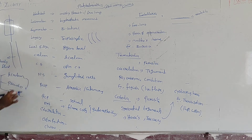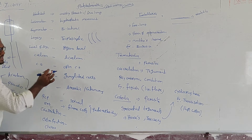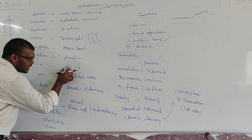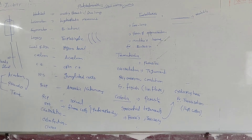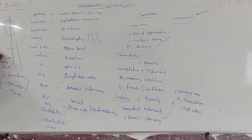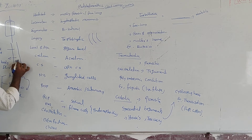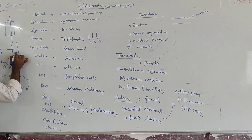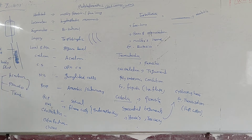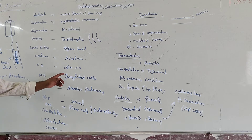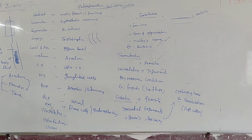Now if we go for the circulatory system, the circulatory system here is an open circulatory system. Open circulatory system means there are no blood vessels. The blood is scattered in the body cavity. That type of circulatory system is called an open circulatory system.